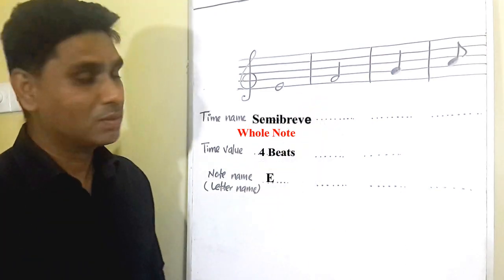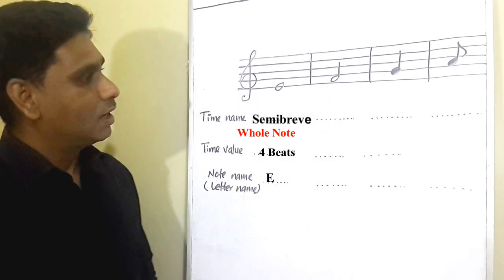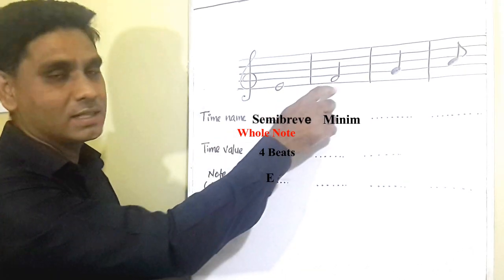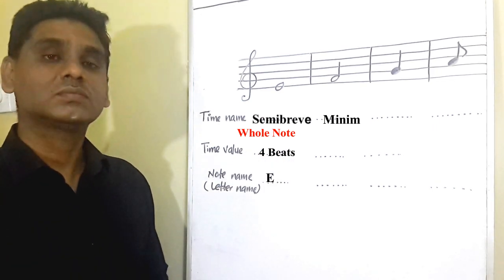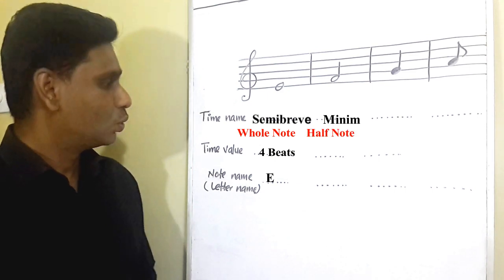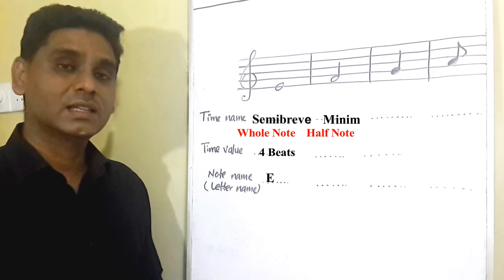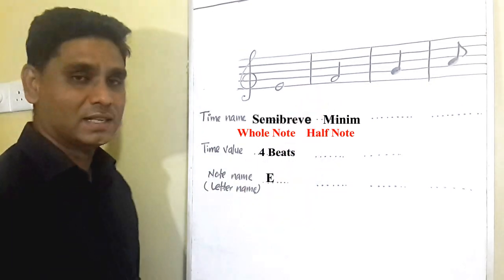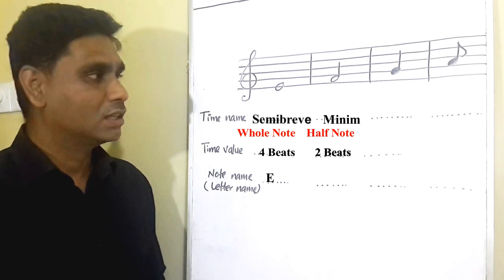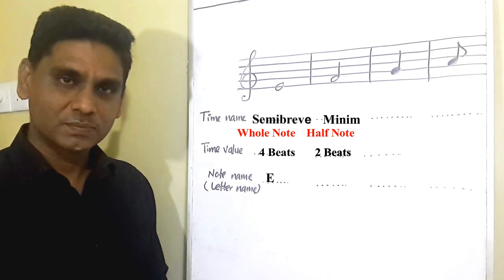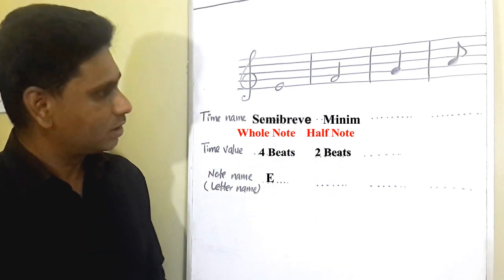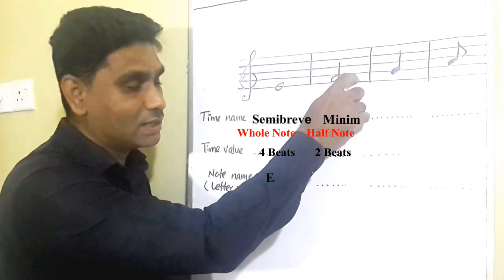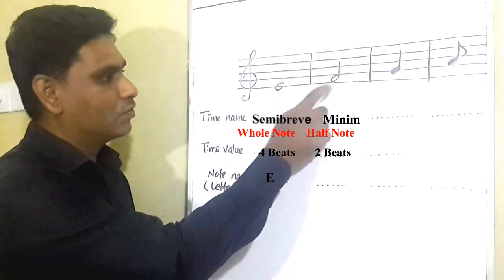Let's go to the second music note. This is quite similar to the semibreve, but there is a stem. This music symbol is called Minim — this is the time name. There is another name for this note as well: Half note. The time value of the minim note is two beats; the sound of this minim note lasts for two beats. The minim note is located at the first space of the treble stave. The first space is F, so the note name of this note is F.